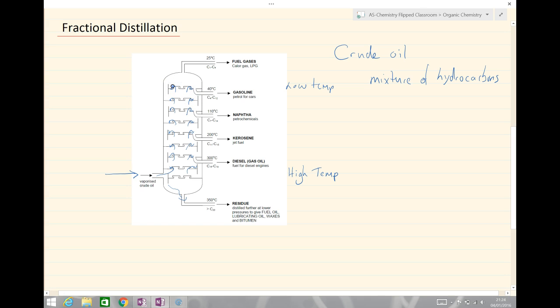Those with the lowest boiling points will make it all the way to the top of the column. They are short chain hydrocarbons, things like methane, ethane, propane and butane. These are our fuel gases.